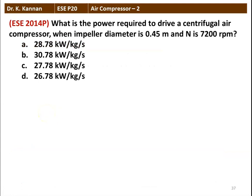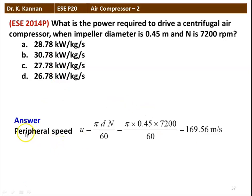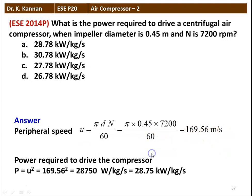The next question is from the 2014 question paper. What is the power required to drive a centrifugal air compressor when the impeller diameter is 0.45 m and speed is 7200 RPM? The peripheral speed u = πDN/60 = π × 0.45 × 7200 / 60 = 169.56 m/s. The power required P = u² = (169.56)² = 28,750 W per kg/s = 28.75 kW per kg/s. The answer is approximately 28.78 kW per unit mass flow rate.